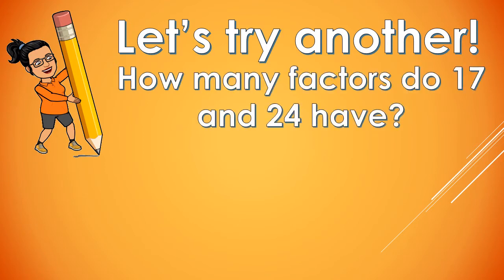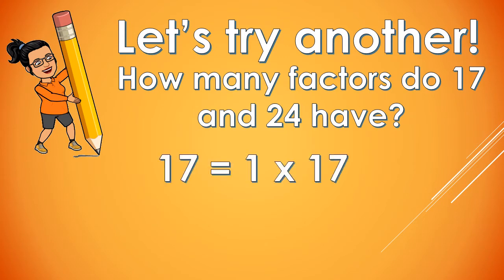Let's try another. How many factors do 17 and 24 have? Will you list the factors of 17? How about 24? If the discussion is too fast for you, please pause the video. Let's check. The factors of 17 are 1 and 17, or 1 times 17. So 17 has 2 factors.